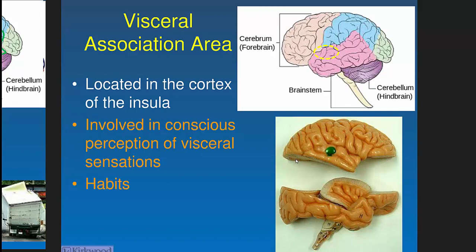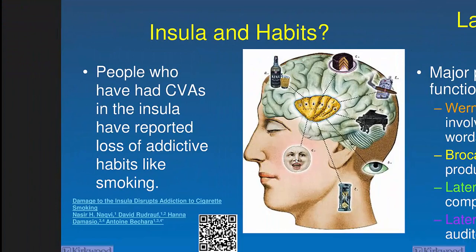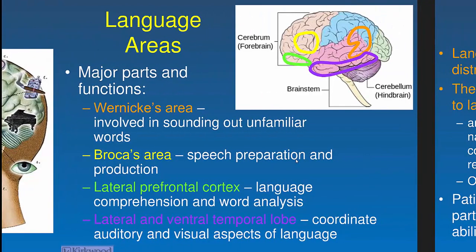The visceral association area is in the insula — it handles conscious perception of visceral sensations like stomachaches or kidney stone pain. Interestingly, a man with a stroke in the insula completely lost the habit of smoking, suggesting the insula may store habits. Language areas are spread all over the brain: Wernicke's area sounds things out (also associated with alcoholism and stuttering); Broca's area controls speech motor movements; the lateral prefrontal cortex handles word analysis; and the lateral temporal lobe coordinates audio and visual aspects.